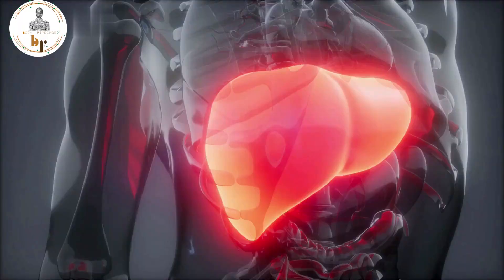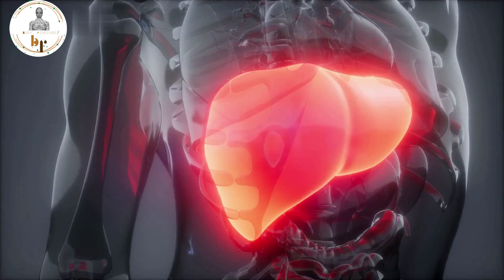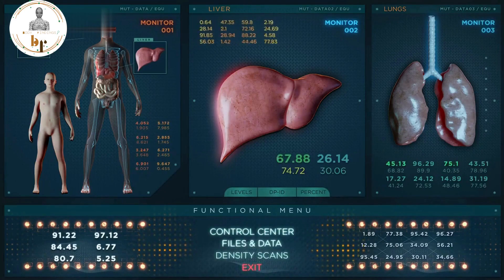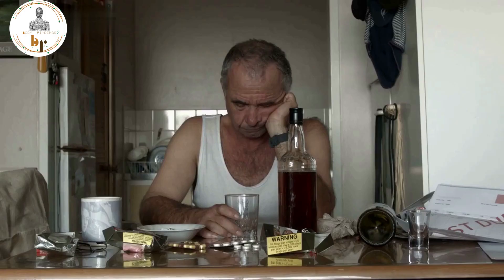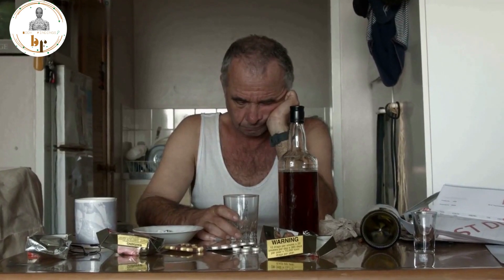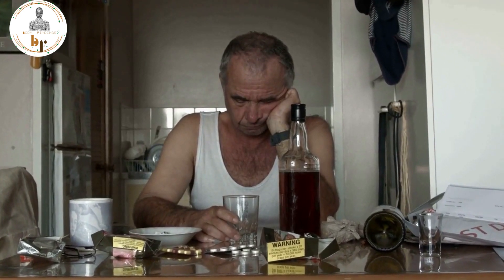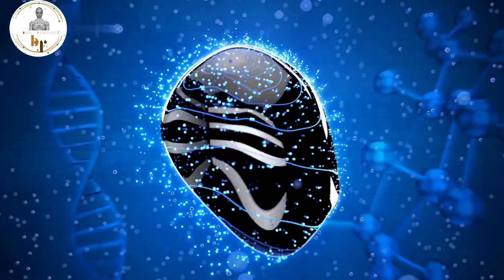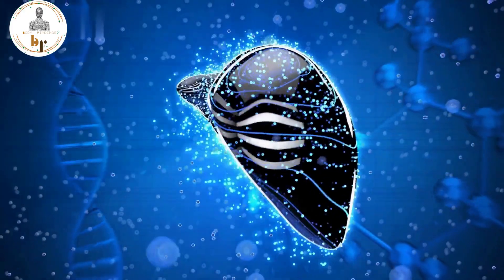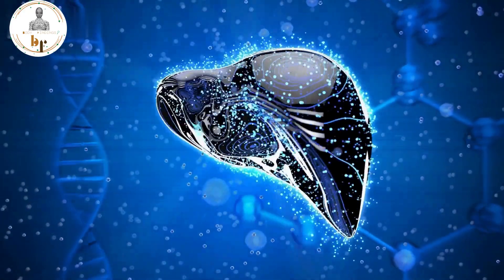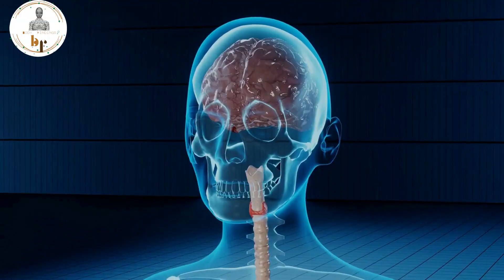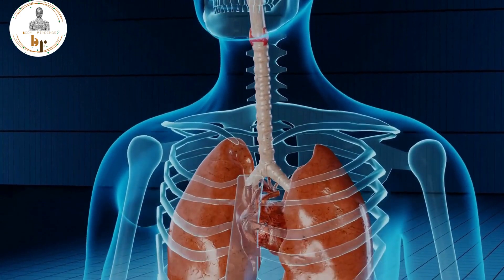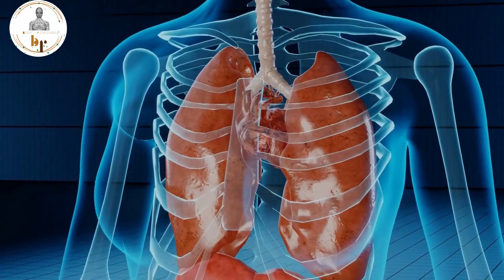At number 9 we have cirrhosis. Cirrhosis is a late stage of liver scarring brought on by a variety of liver disorders and conditions, including prolonged alcoholism and hepatitis. This affects the liver function. The liver is built in such a way that whenever it gets injured, it tries to repair itself. In this process scar tissue forms, and more scar tissue is formed as cirrhosis progresses.